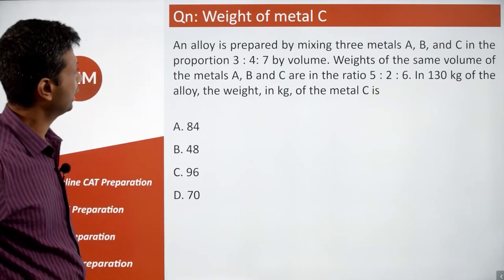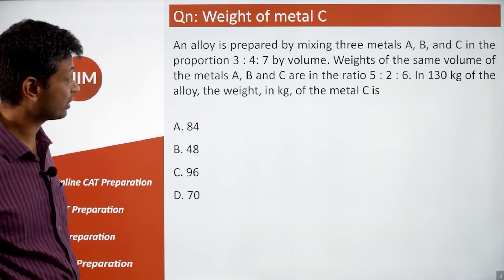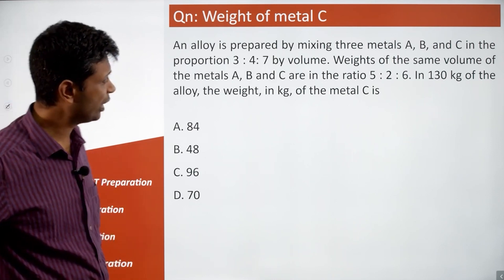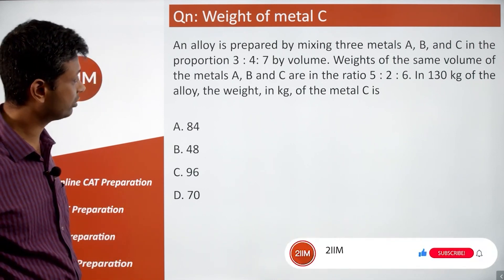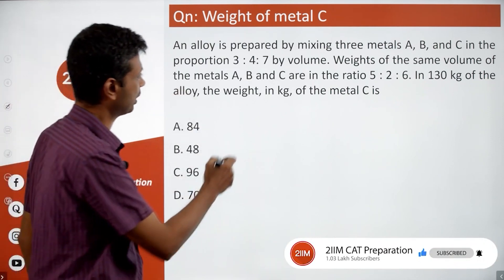Wonderful, we are going to start doing this one. An alloy is prepared by mixing three metals A, B and C in the proportion 3:4:7 by volume. Weights of the same volume of the metals A, B and C are in the ratio of 5:2:6. In 130 kilograms of the alloy, we will come to the question part later.